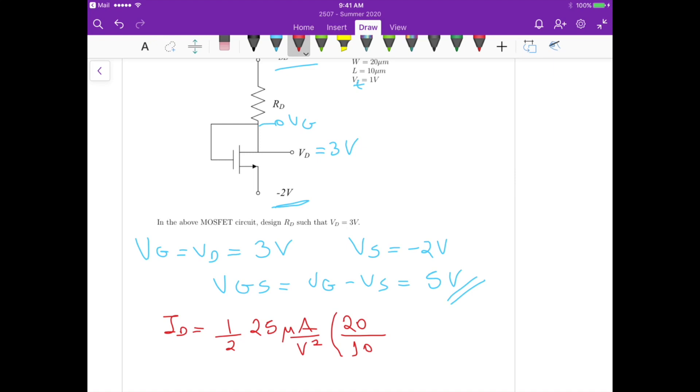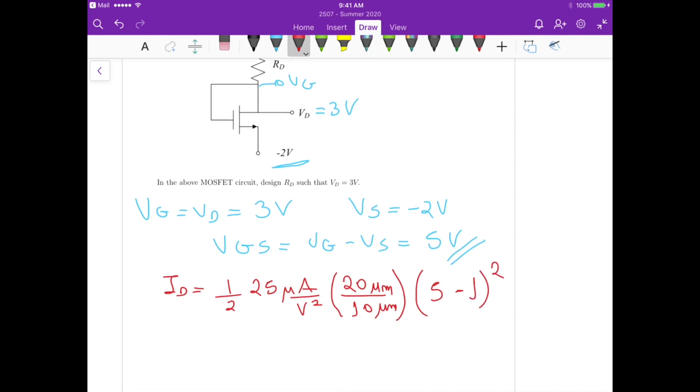I could use the units here, but they will cancel out, times VGS which in our case it's 5, minus the threshold voltage which in our case it's 1 volt squared. So this one here gives us a drain current that it's equal to 400 microamperes.